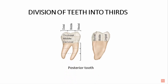For posterior teeth, the crown is divided into the occlusal third, middle third, and cervical third towards the cervical line. Mesiodistally: mesial third, middle third, and distal third. On the proximal surface: lingual third towards the tongue, middle third, and buccal third towards the cheek.